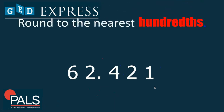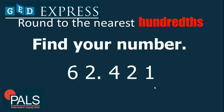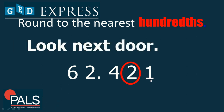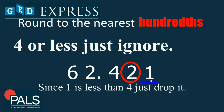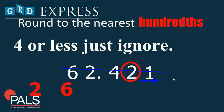We have 62.421 — '62 and 421 thousandths.' We are going to round this to the nearest hundredths. The number in the hundredths place is 2, and the number that follows it is 1. Following the rule: since 1 is 0 to 4, we let the number stay and just drop the remaining digit. So the rounding of 62.421 becomes 62.42.